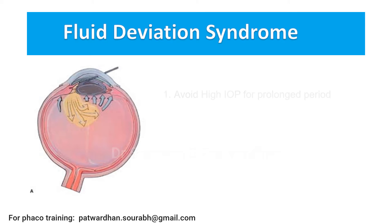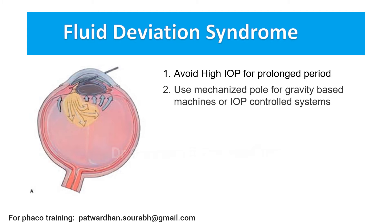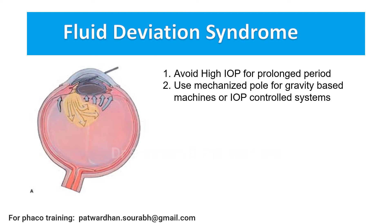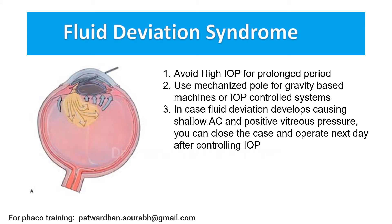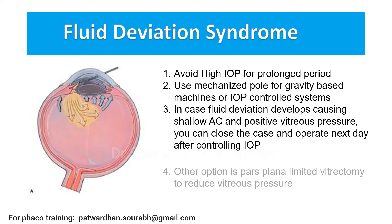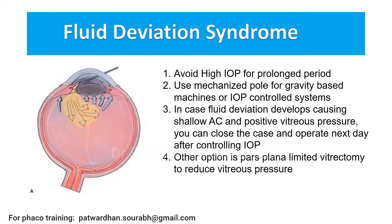For fluid deviation, we must remember a few things. To avoid it, avoid high IOP for a prolonged period. It is better to use a mechanized pole for a gravity-based machine or use an IOP control machine so that you can perform the procedure at lower IOP. Not all steps of FACO require high IOP. In case fluid deviation develops and causes shallow AC and positive vitreous pressure, you can close the case and operate the next day after controlling the intraocular pressure. Another option is to do pars plana limited anterior vitrectomy to reduce vitreous pressure and complete the case, though there is always a risk of suprachoroidal hemorrhage in patients prone for that.